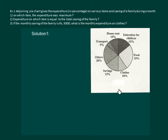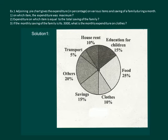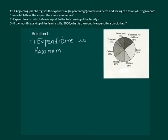Firstly, on which item was the expenditure maximum? Clearly from the graph, maximum expenditure is done on food, that is 25%. So we can write: expenditure is maximum on food.